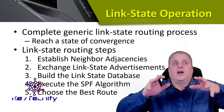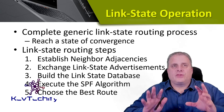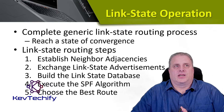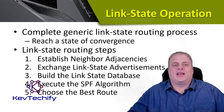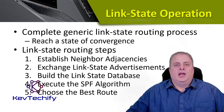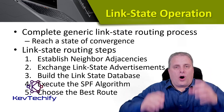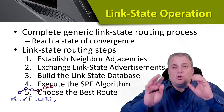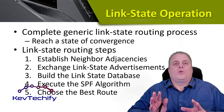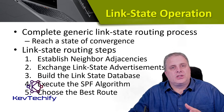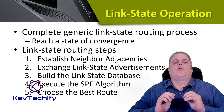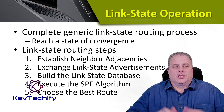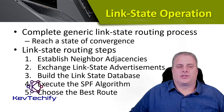To maintain routing information, OSPF routers complete a generic link state routing process. When they complete that process, they reach a state of convergence. In this state of convergence, all routers know about all link states. Because they know about all states, they can figure out the best paths to each node, calculate those distances, and determine the best routes. Link state routing goes through several steps to establish this.